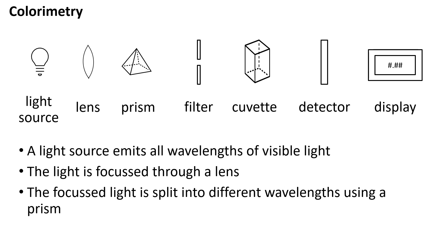The diagram shows some of the main components of a colourimeter. A light source, shown on the left, emits all wavelengths of visible light. The light is focused through a lens and then split into different wavelengths using a prism.